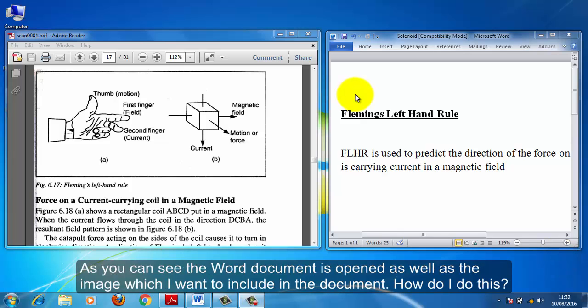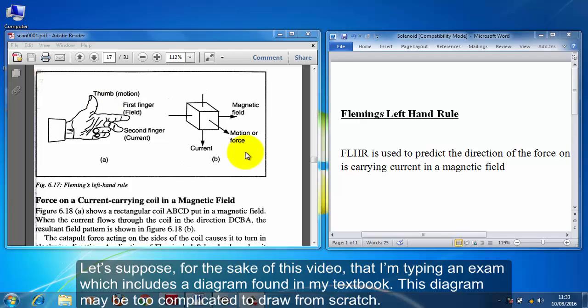As you can see, the Word document is opened as well as the image which I want to include in the document. How do I do this? Let's suppose for the sake of this video that I'm typing an exam which includes a diagram found in my textbook.